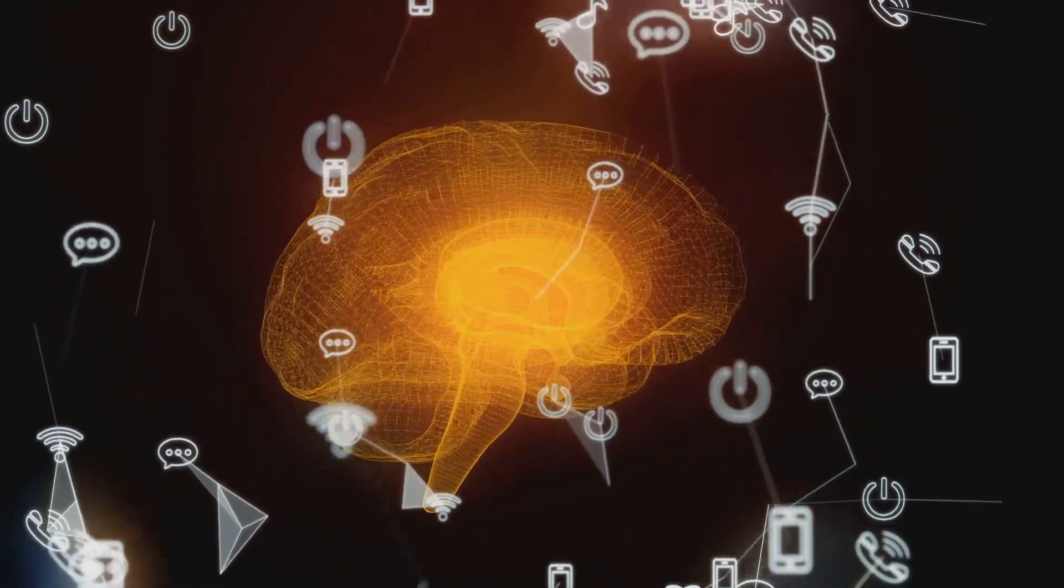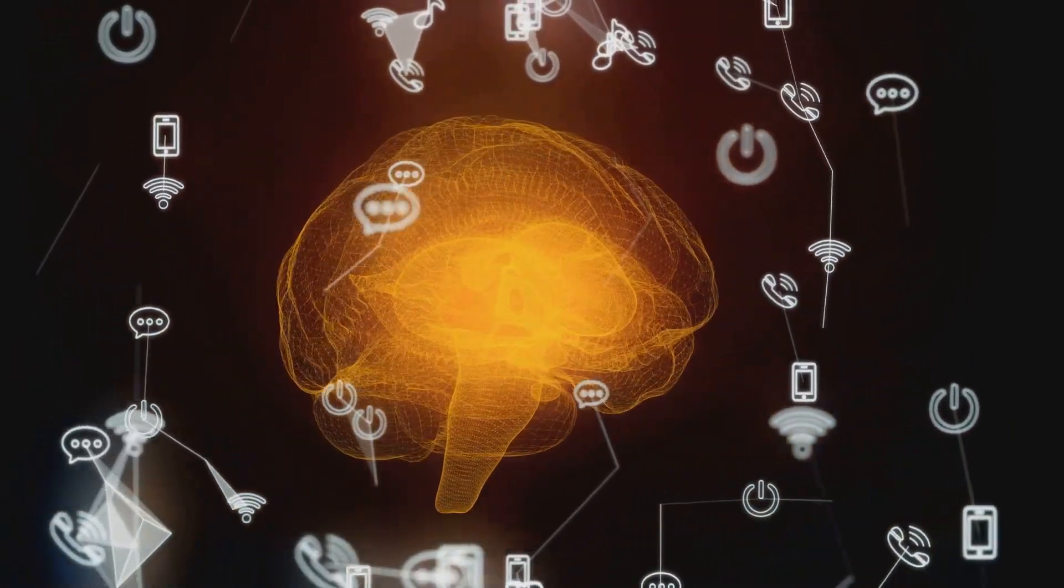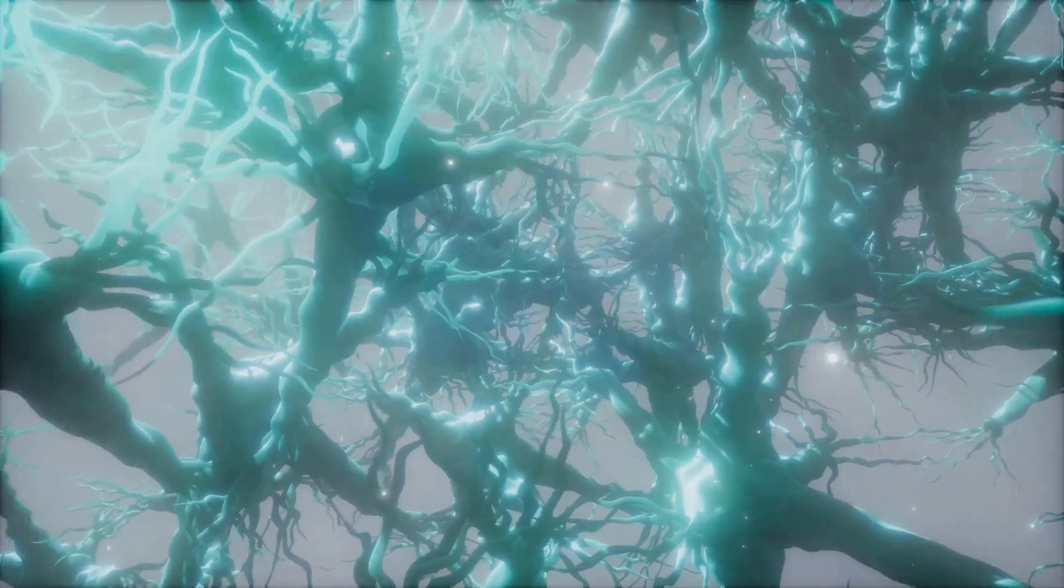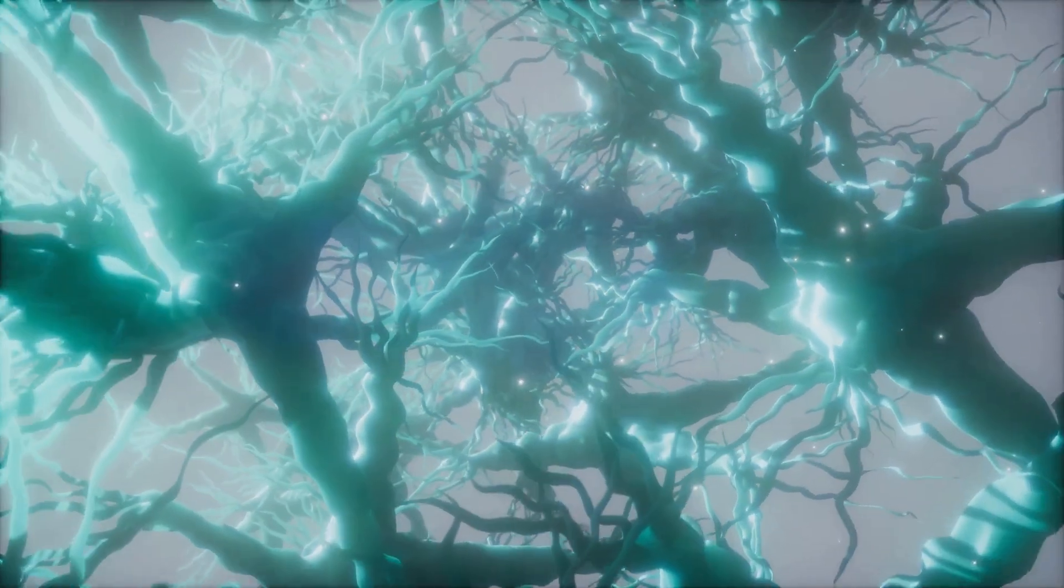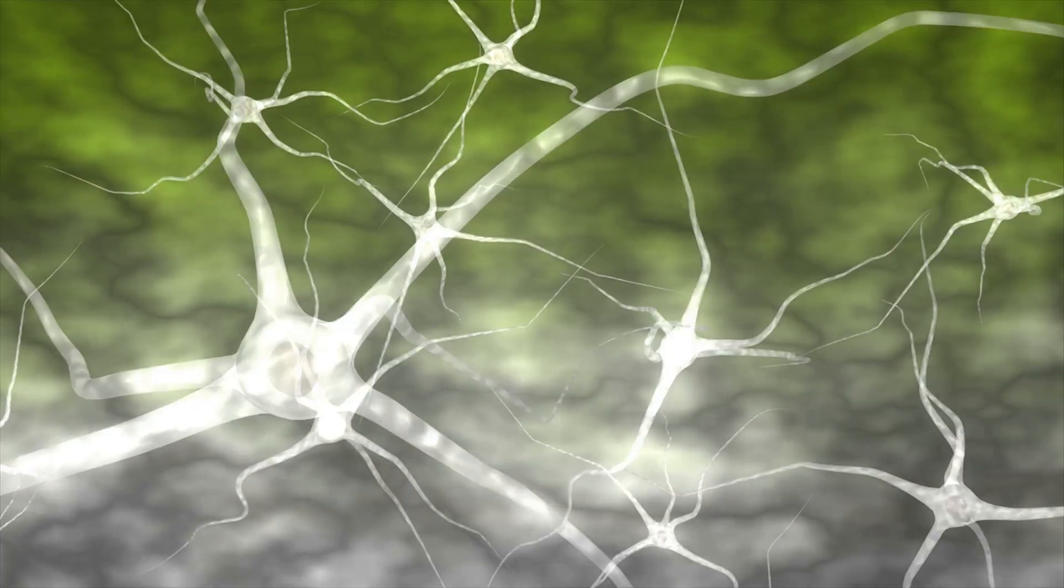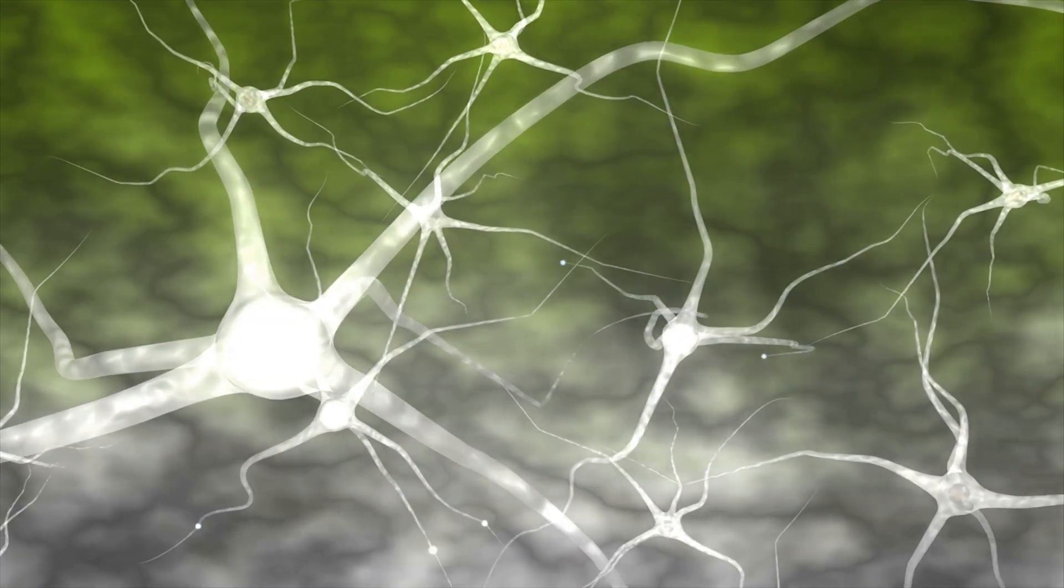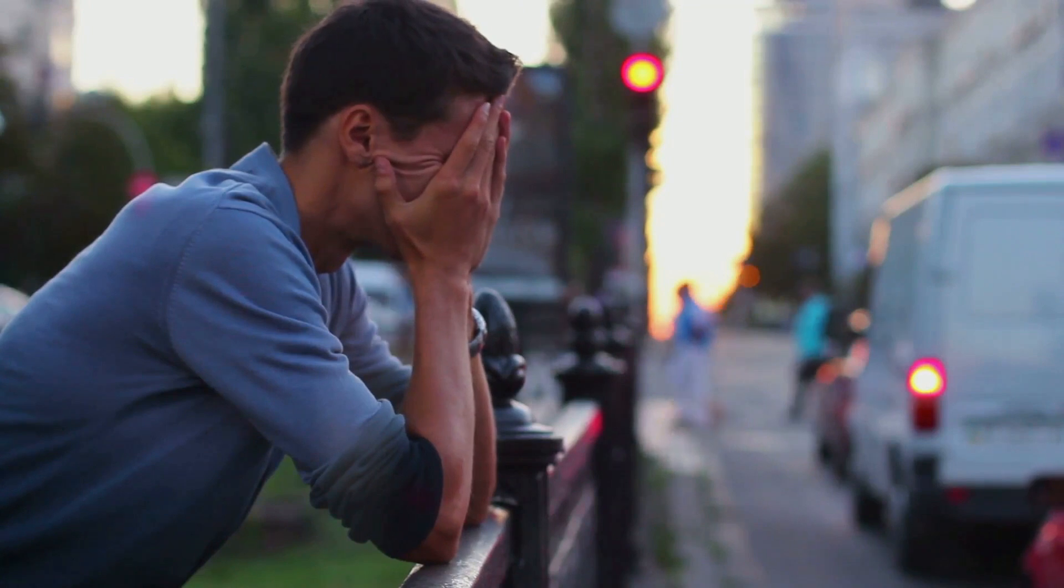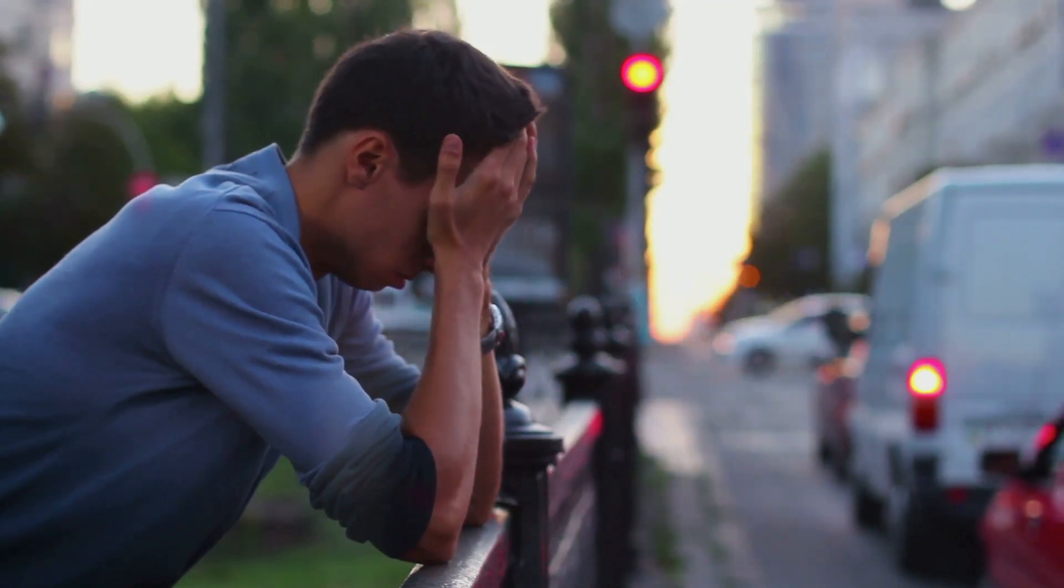So, what happens if the keys or locks malfunction, if the messages get lost or garbled? Well, without neurotransmitters, this bustling city, your brain, would descend into chaos. Communication would break down, and everything from your mood to your ability to learn could be impacted.